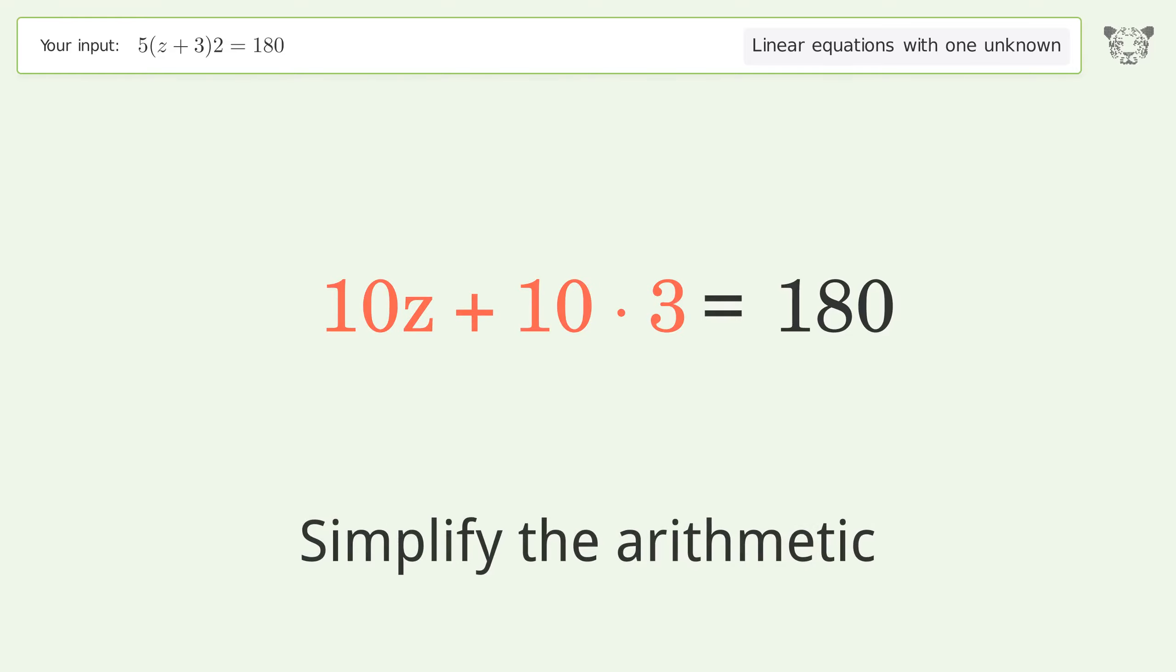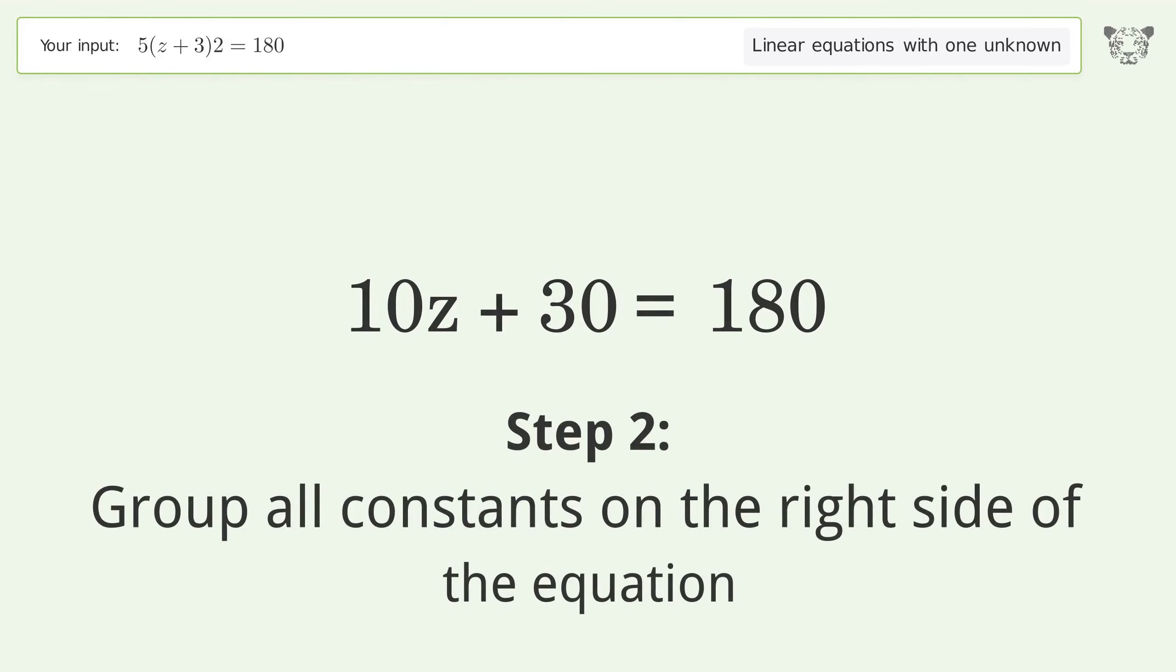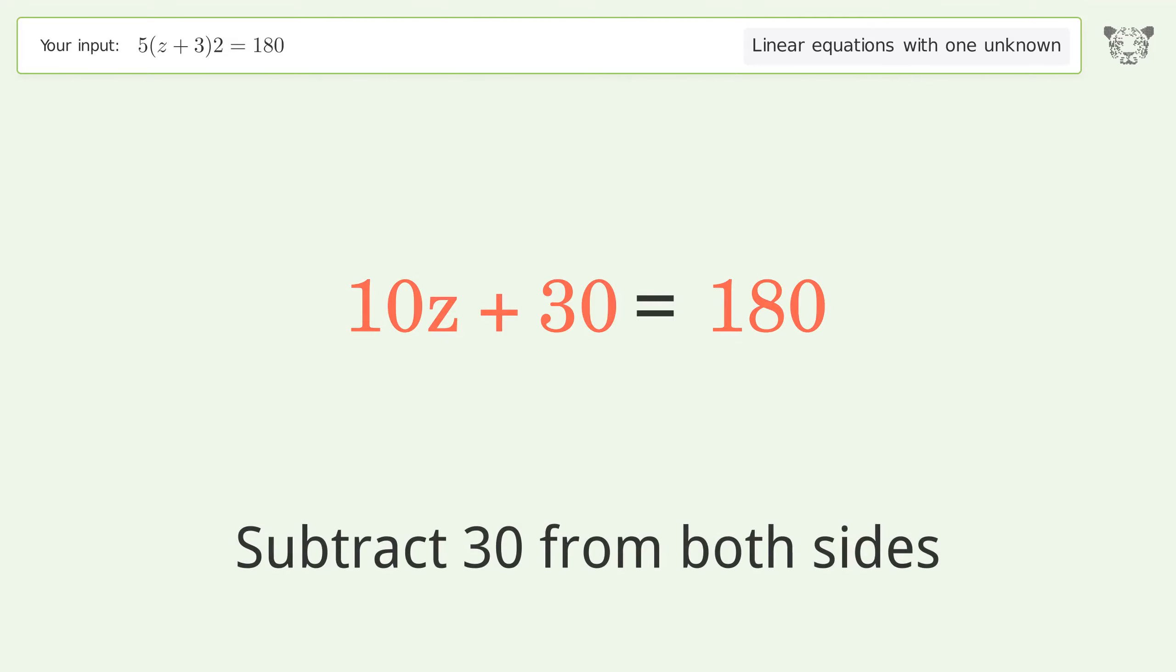Simplify the arithmetic. Group all constants on the right side of the equation. Subtract 30 from both sides.